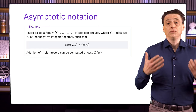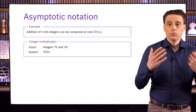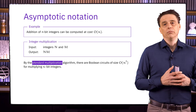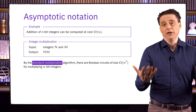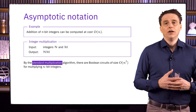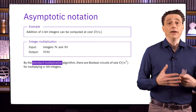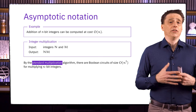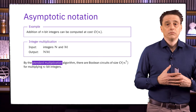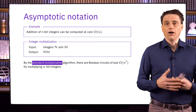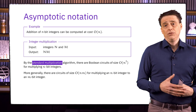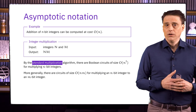Here's another example of a computational problem: multiplication of integers. If we consider the standard multiplication algorithm — the base 2 analog of the method for multiplying numbers taught in elementary schools, which is basically just shifting and adding when working with numbers in binary — we find that there are Boolean circuits having size big O of N² for multiplying N-bit integers. In essence, we need to do roughly N additions, each of which has linear cost, and so we end up with quadratic cost overall. This can be generalized: if one number has N bits and the other has M bits, then we need circuits of size big O of N times M.